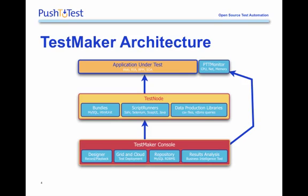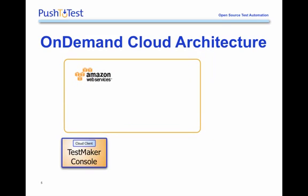The TestMaker architecture also has a back-end monitoring component called PTT Monitor. It observes CPU, network, and memory utilization on the server running your application, or maybe the database. Let's see how this would work with the Push2Test on-demand network. Push2Test is already partnered up with Amazon, GoGrid, Rackspace, and CollabNet to create the on-demand network. In this environment, the TestMaker console already has the cloud client built into it to communicate with Amazon Web Services. So when you press the Start key on the TestMaker console, the cloud client communicates with Amazon Web Services directly. That communication passes along the credentials to operate the test, an Amazon Machine Instance, or AMI file ID.